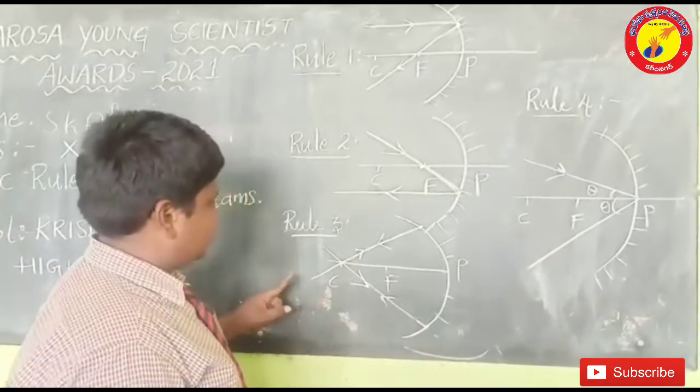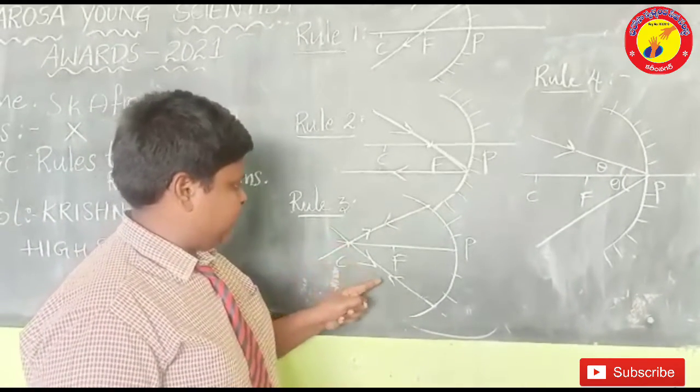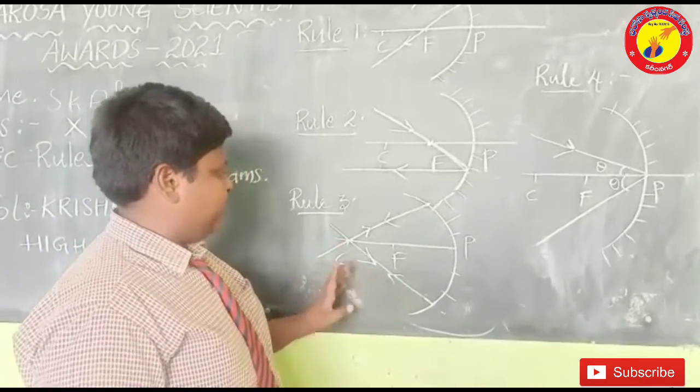Rule 3: The ray which is moving through centre of curvature, it retraces back in its way.